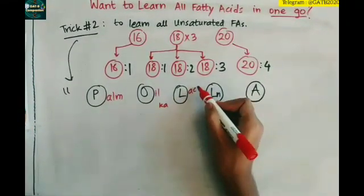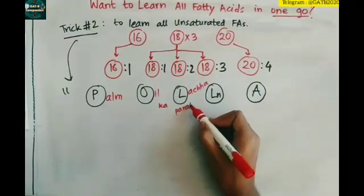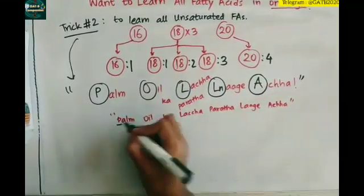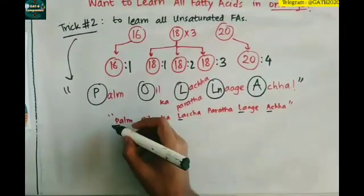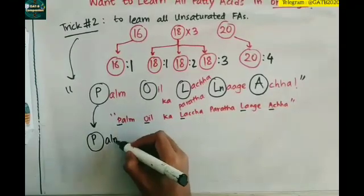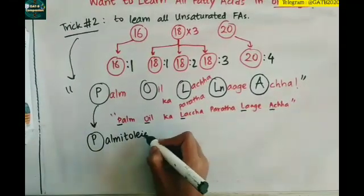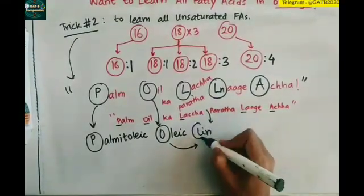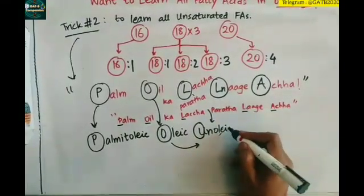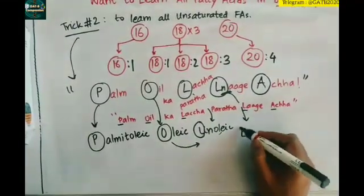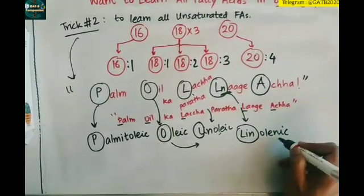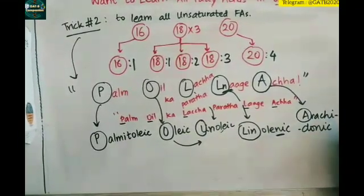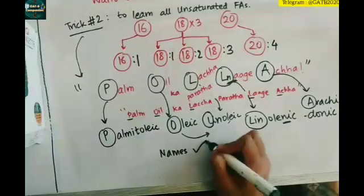This is a funny trick: palm oil ka lachha paratha. P O L L A, so it's palmitoleic, oleic, linoleic, linolenic (that's with small N), and arachidonic. So names are done.